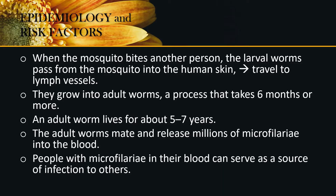When the mosquito bites another person, the larval worms pass from the mosquito into the human skin. They travel to lymph vessels and grow into adult worms, a process that takes six months or more. An adult worm can live in the host for about five to seven years. When these worms mate and release millions of microfilariae in the blood, people with microfilariae can serve as a source of infection to others.